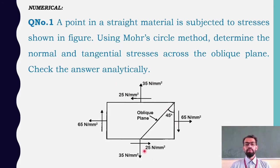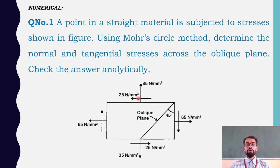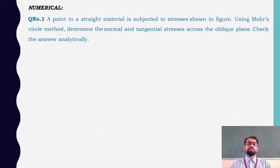From the figure, in the horizontal direction sigma 1 is acting with 65 N/mm² and in the vertical direction sigma 2 is acting with 35 N/mm². Both are moving away from the element, meaning both are under tensile stress. The shear stress is acting in the anticlockwise direction, and the oblique plane makes a 45-degree angle with the vertical.